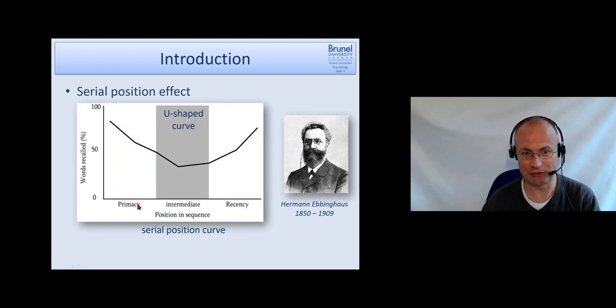This graph shows on the x-axis the position of the word in the sequence - word one, word two, word three, the first words, the last words, and the middle words. The y-axis shows you how many words have been recalled in percentage, so 50% means half of the words are recalled. This is just an example to illustrate the effect which was first discovered by Hermann Ebbinghaus. This serial position curve indicates that the first words are remembered better and the last words - this is called the primacy effect and the recency effect.